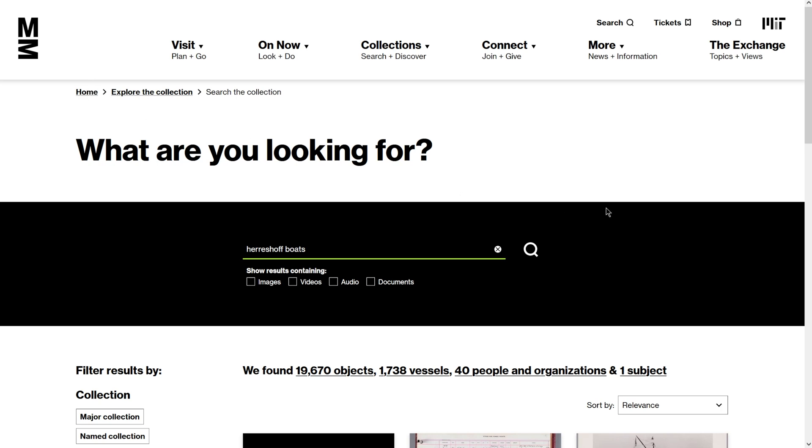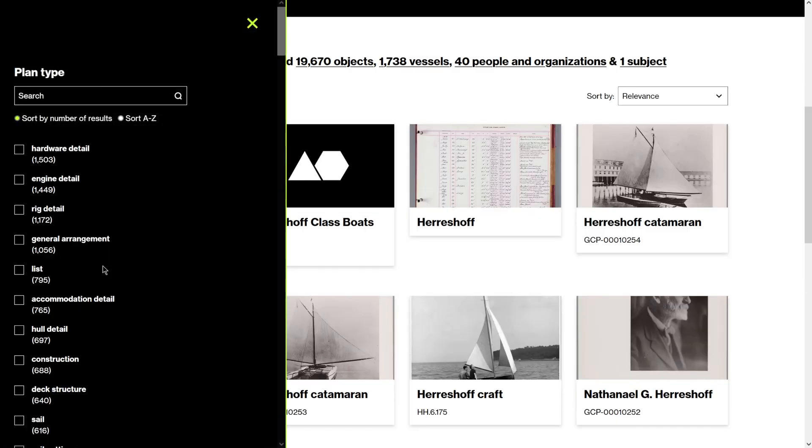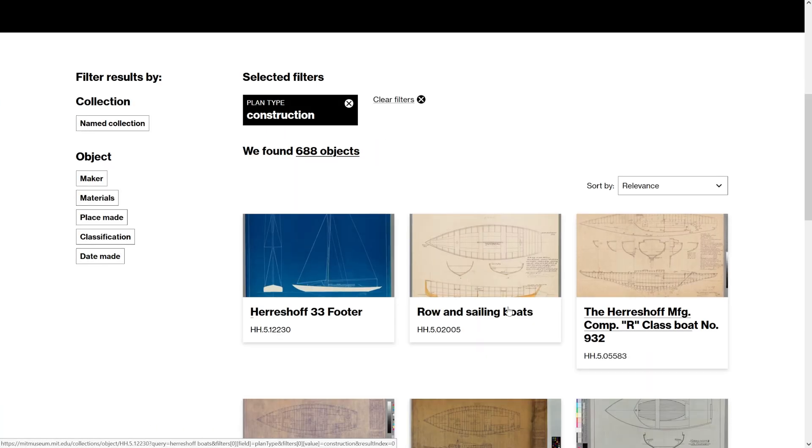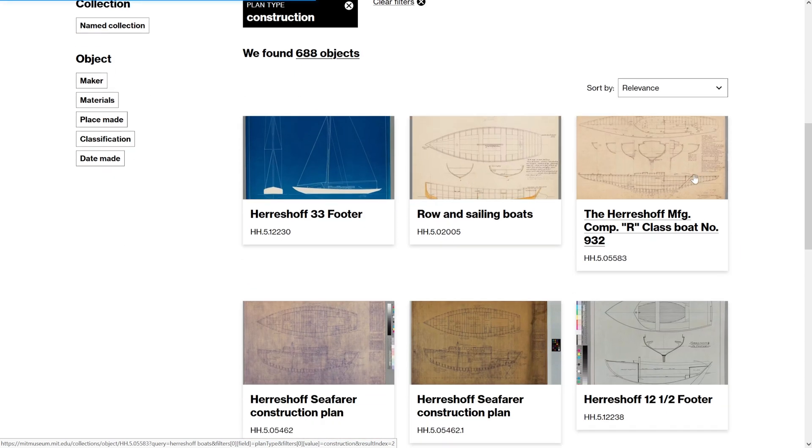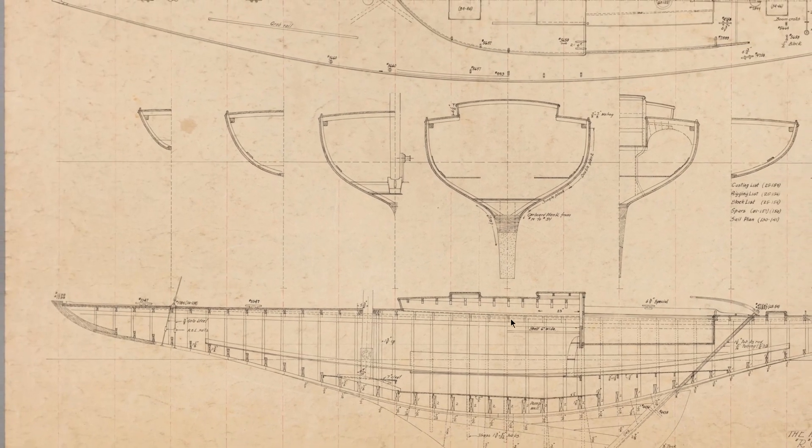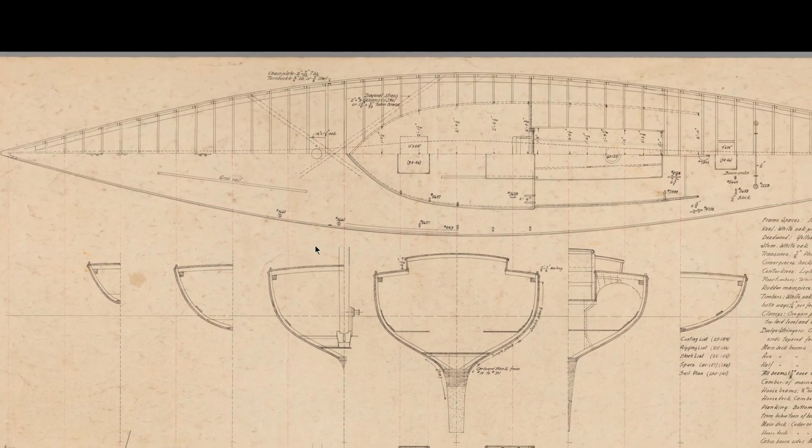Apparently the MIT Museum has a lot of the Harreshoff stuff in their database. So let's see if we can filter by construction. Yes, so this is what I'm looking for, something like this. Something that shows the hull design of the boat that we can bring in and kind of slice up right in SketchUp.